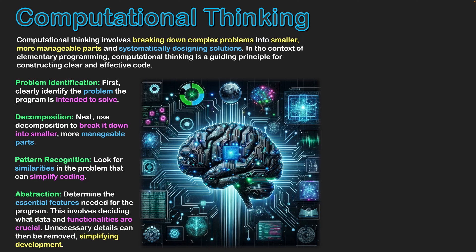The next area is abstraction — really looking at our problem and focusing on what are the essential features. What are we specifically trying to address, and what functionalities do we need to create in order to address them? In doing this, we are also doing the opposite: identifying what initially seemed necessary but now can be removed from our priorities. Through being specific on what we need to target, we simplify development by focusing on key points while minimizing distractions.